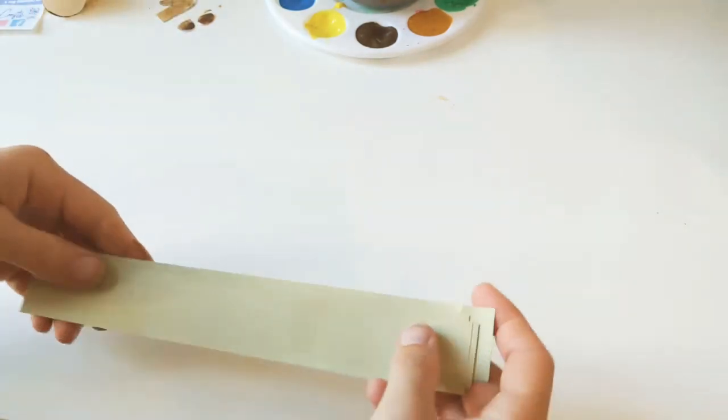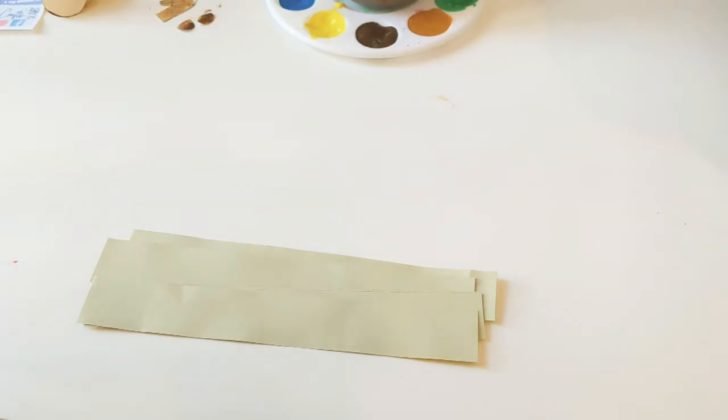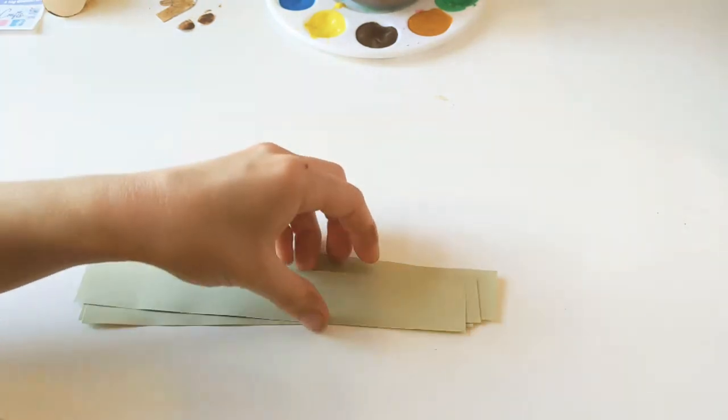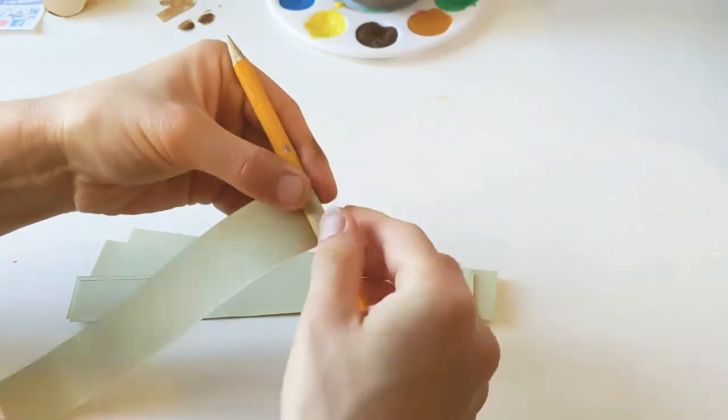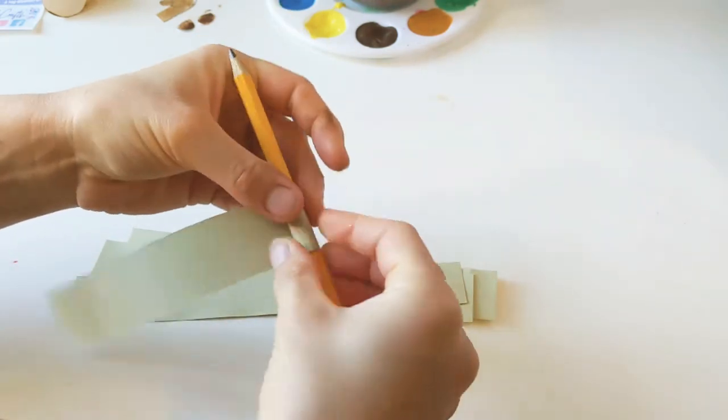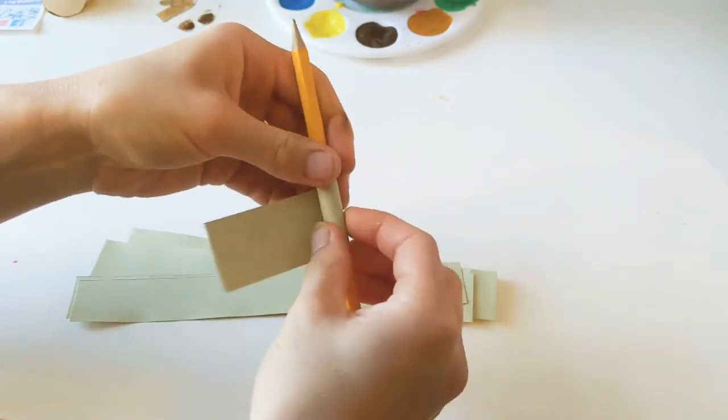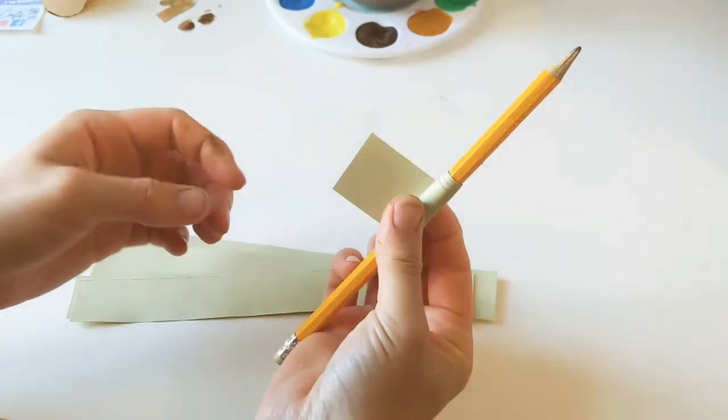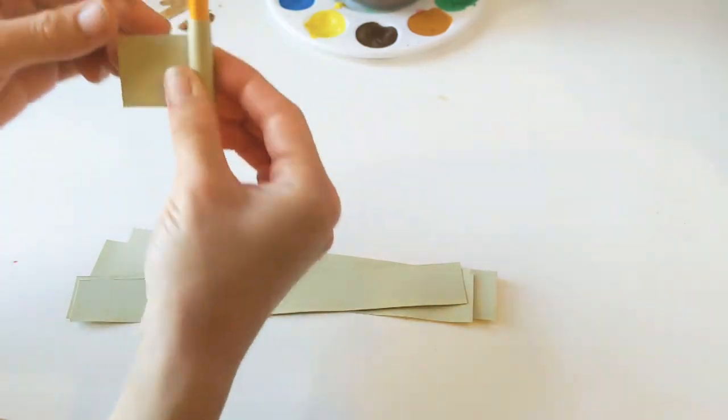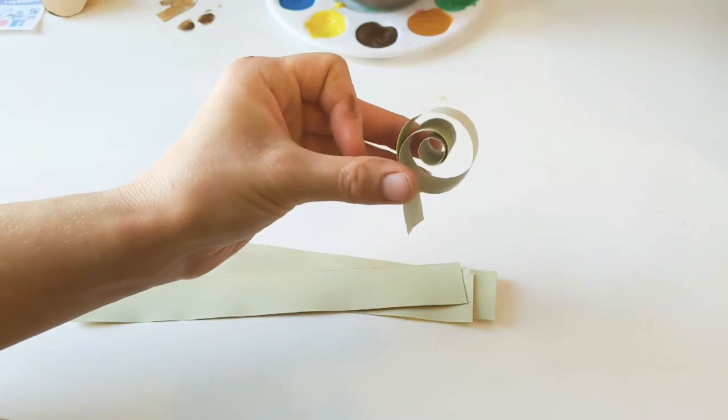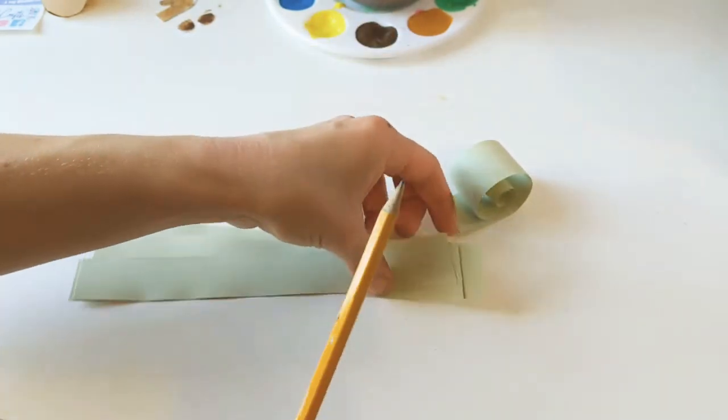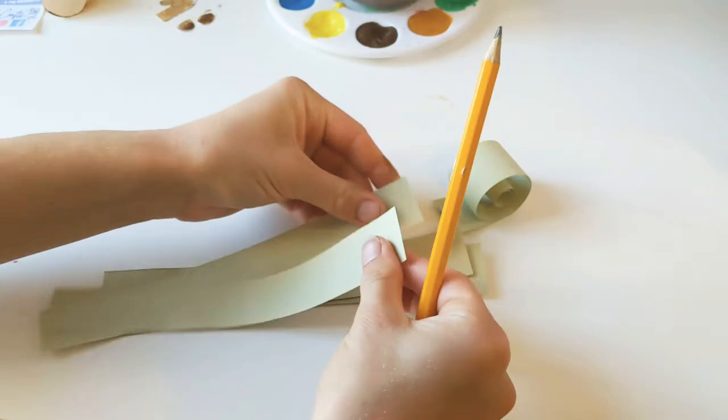Now the next thing that we're going to do is we're just going to get our leaf bits ready for our treetop. So in your pack we've got all of these green strips and we're just going to need to take a pencil or a straw or the end of your paintbrush and we're going to wrap this all the way around and we're going to roll down here until we've just got a little tag which we can use to stick inside our tree and then we pull that out and that's going to make our first curly branch. So we're just going to do this with all of the strips.